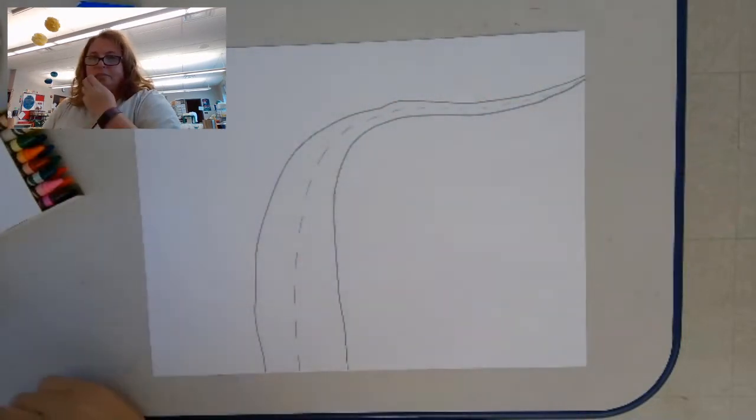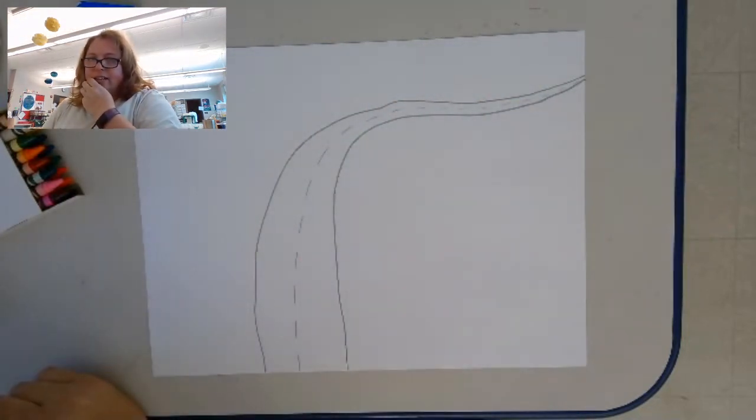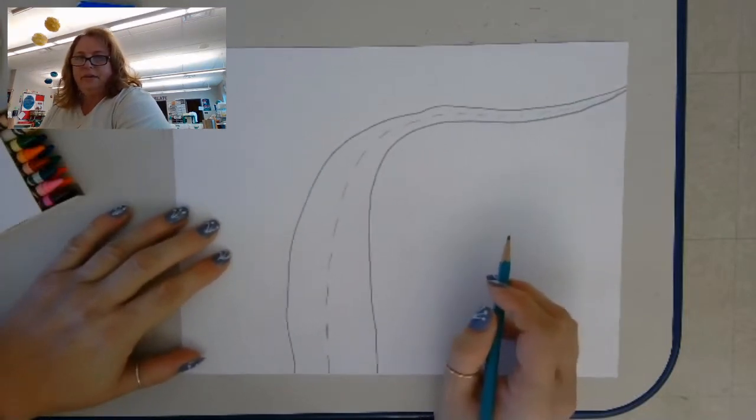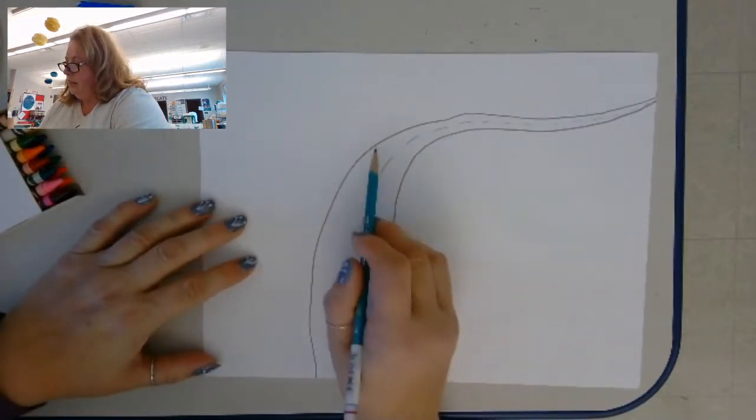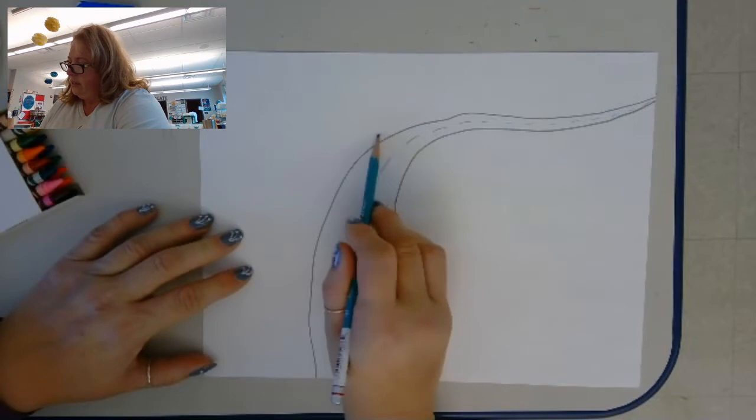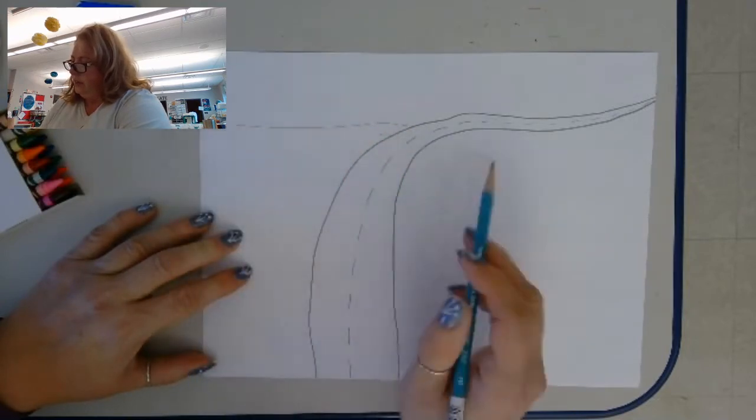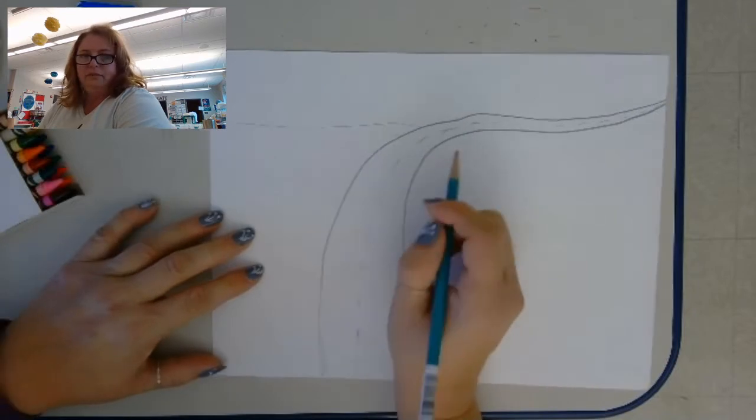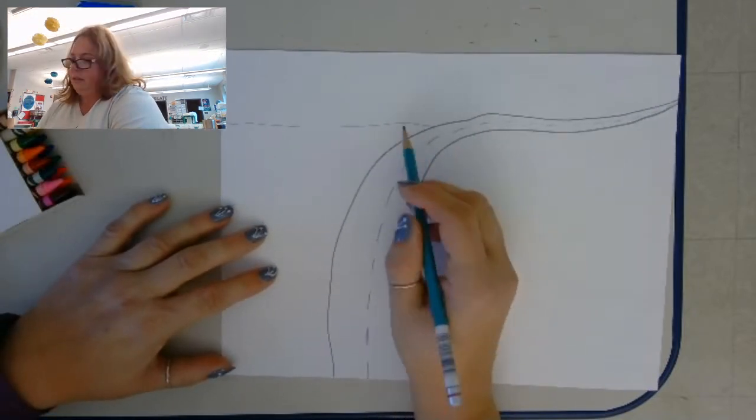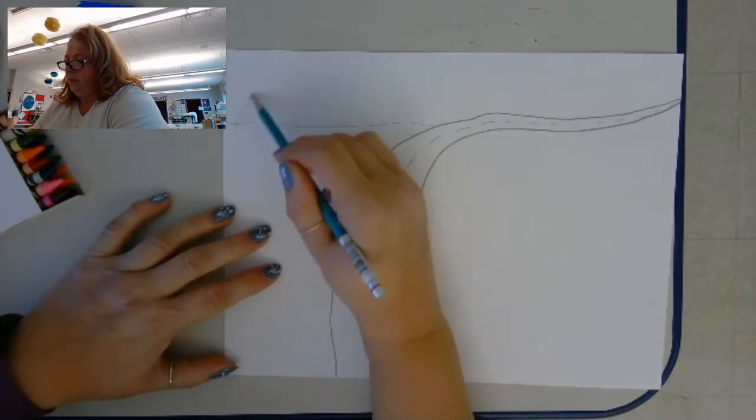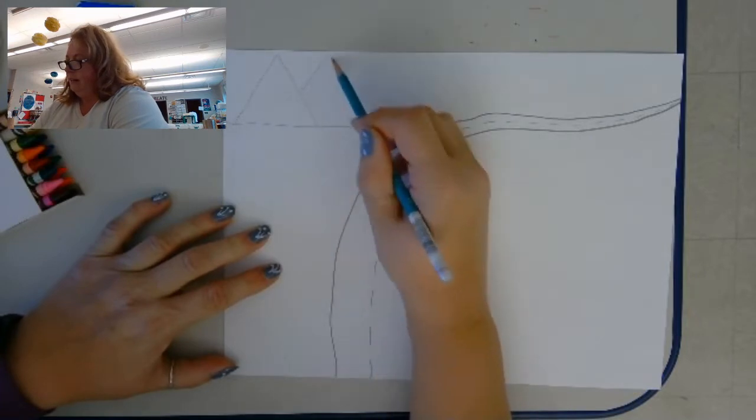Next I'm going to do some mountains in the background. So I'm just going to take and draw myself a horizon line from the road just to give me an idea of where I'm going to draw my mountains, and then I'm going to start with some upside down V's.